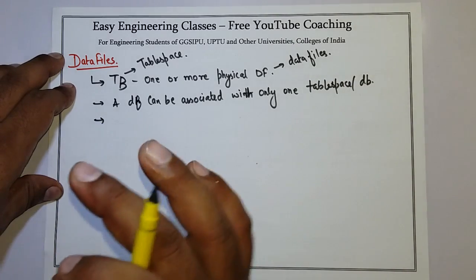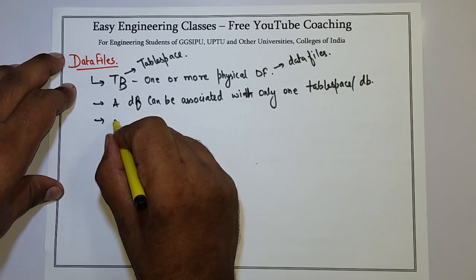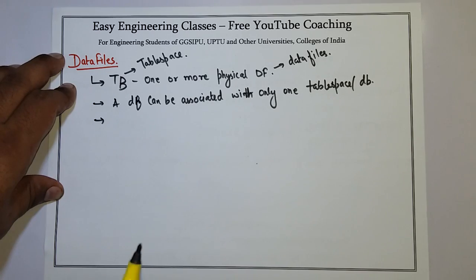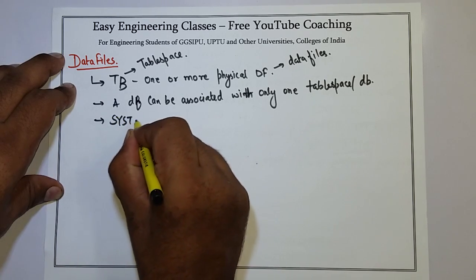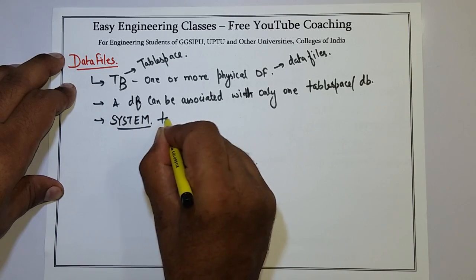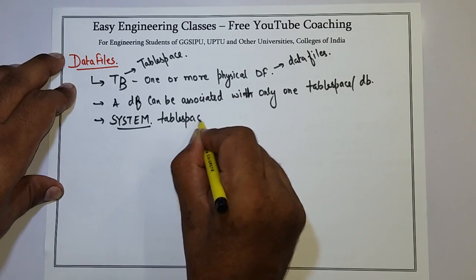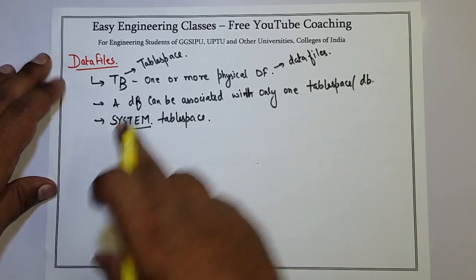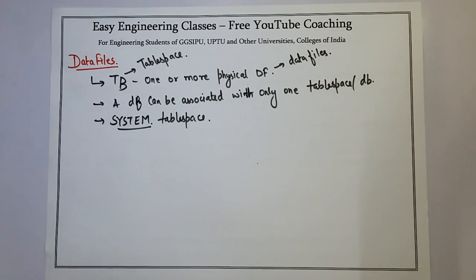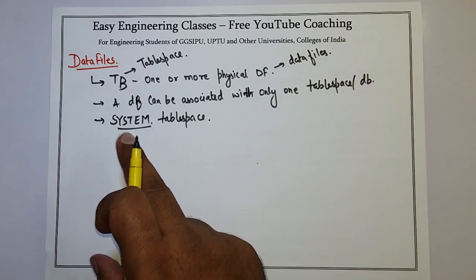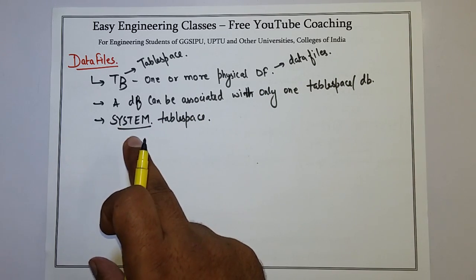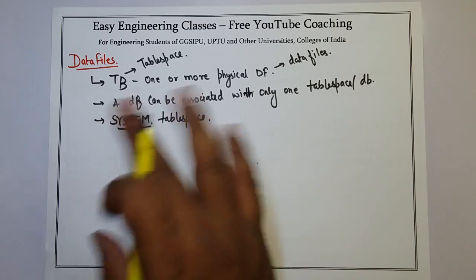Whenever Oracle creates a database for the first time, it allocates the first data file of any database for the system table space. System table space is very important because it is related with the efficient working of the database, as it contains permanent information about your database and contains tables and views which have information about administrative tasks. That is the reason it is the first data file that gets created for the system table space.